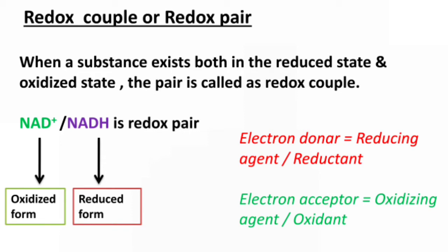Here, the electron donor is also called as the reducing agent or reductant, and the electron acceptor is called as the oxidizing agent or oxidant. For example, NADH can donate electrons, so you call NADH the reductant, whereas NAD+ accepts the electrons, so that's why it is called the oxidant or oxidizing agent.